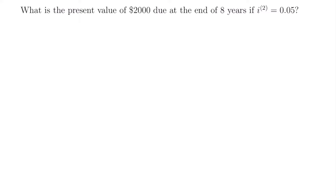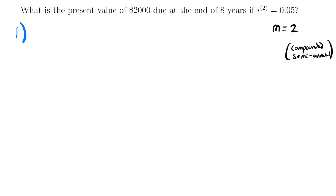We know from this that our number of periods, m, is equal to 2. So that means that this nominal annual rate is convertible two times per year, or convertible semi-annually. Now, there are actually two different ways we could go about finding the present value of $2,000. We could either find the effective semi-annual rate and use that, or find the annual effective rate and use that.